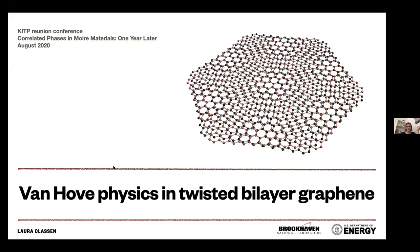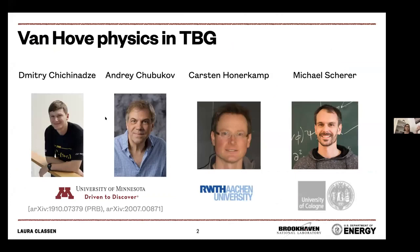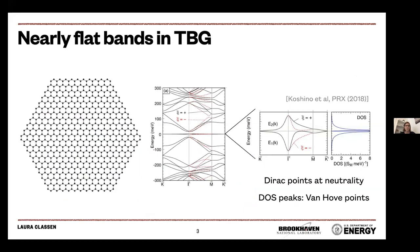My talk is going to be about Van Hove physics and twisted bilayer graphene. I want to start by also thanking my collaborators on this topic, and in particular Dimitri Shishinatze, who is a graduate student at the University of Minnesota and who should really get all the credit for almost all the results I'm going to present. You can find these results in two publications on the archive. I don't think I have to really introduce twisted bilayer graphene — just to set the stage, I want to say a few words and maybe emphasize some aspects we didn't discuss before.